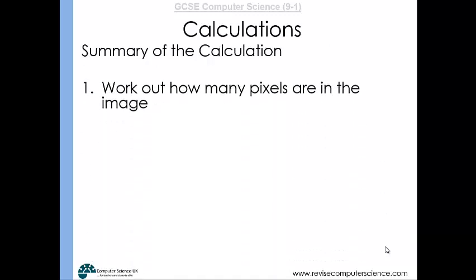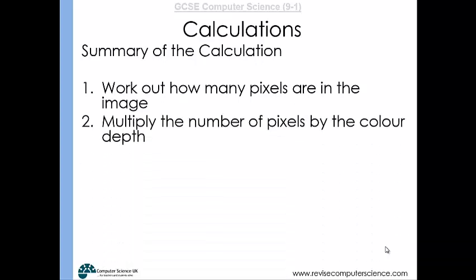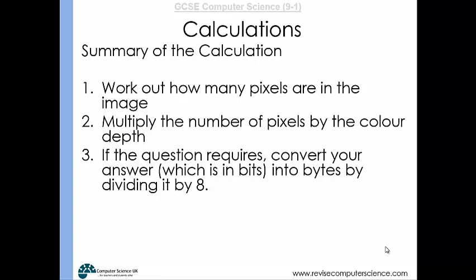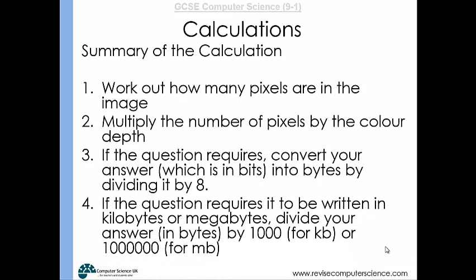In summary: work out how many pixels are in the image, then multiply the number of pixels by the colour depth. If required, convert your answer from bits into bytes by dividing by 8. If the question requires kilobytes or megabytes, divide your answer by 1,000 or 1,000,000 respectively.